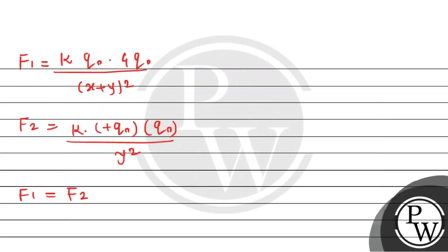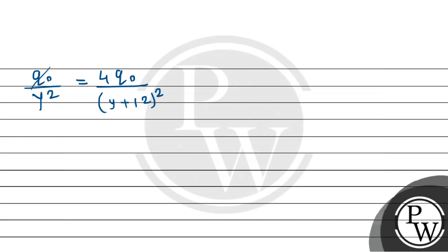So देखिए Q0 से Q0 cancel out हो गया, और simply बच जाएगा Q0 by Y का square equals 4 times Q0 divided by Y plus X (X कितना था 12), that whole square. यहां से K और Q0 भी cancel out हो जाते हैं। इसको cross multiply करेंगे, so हो जाएगा Y plus 12 equals twice of Y.